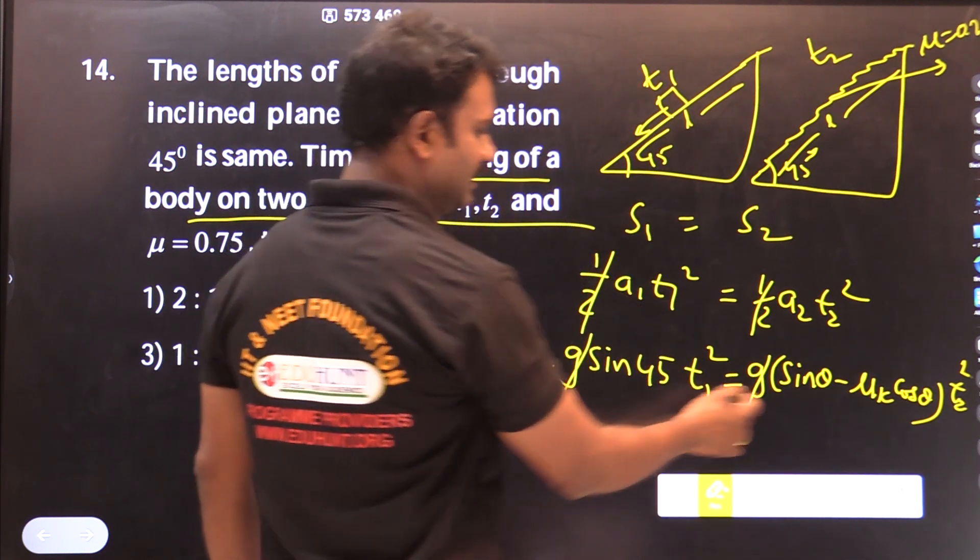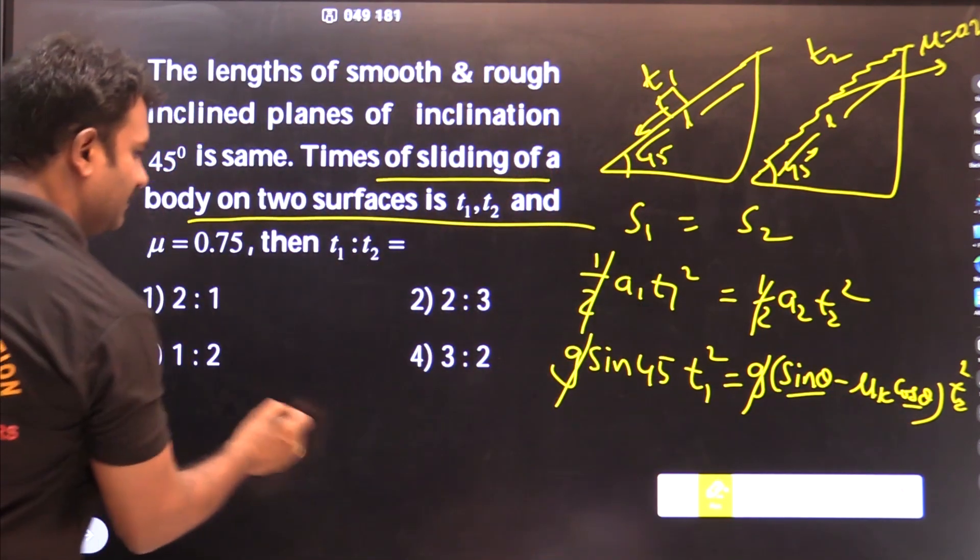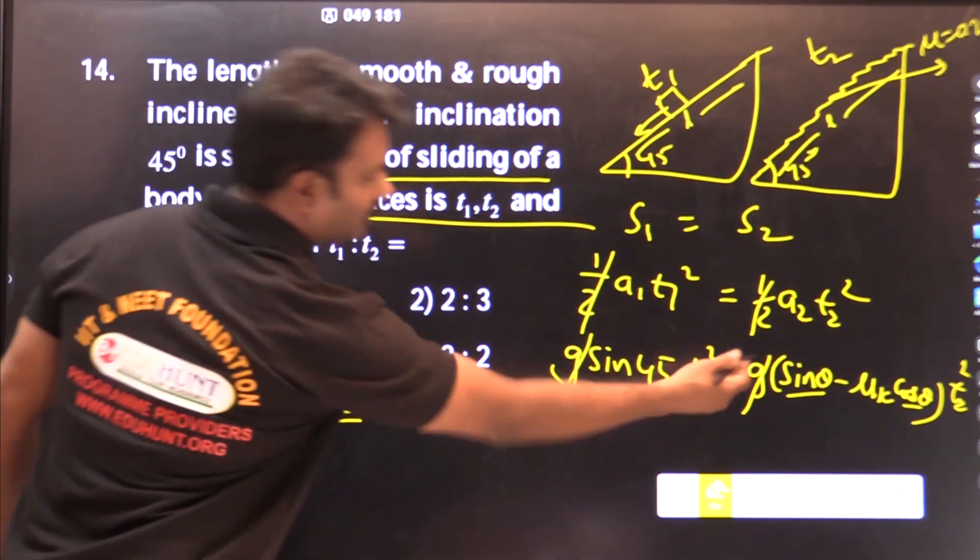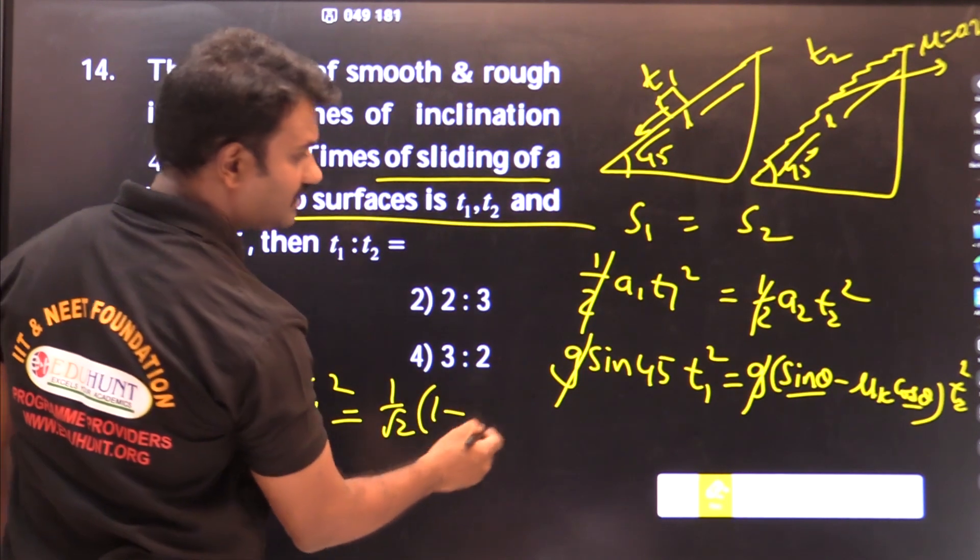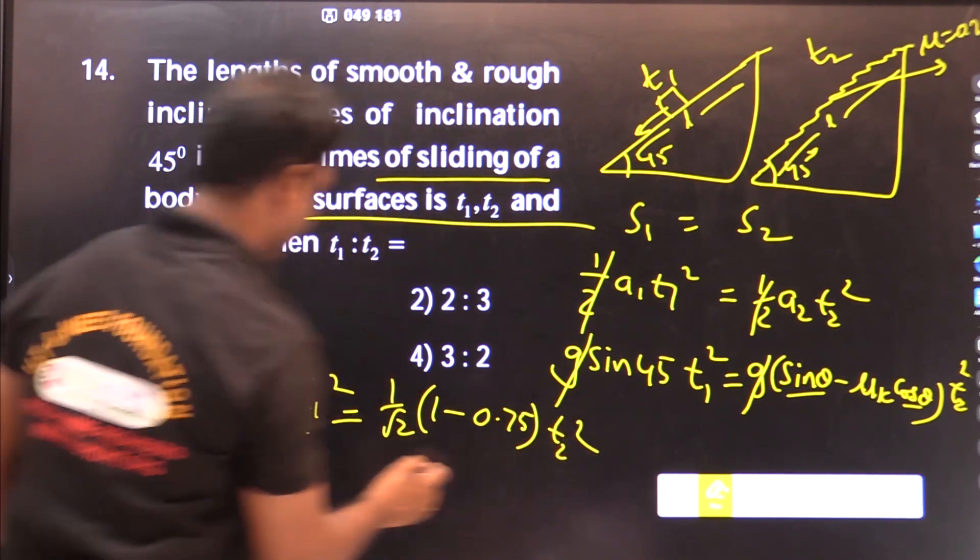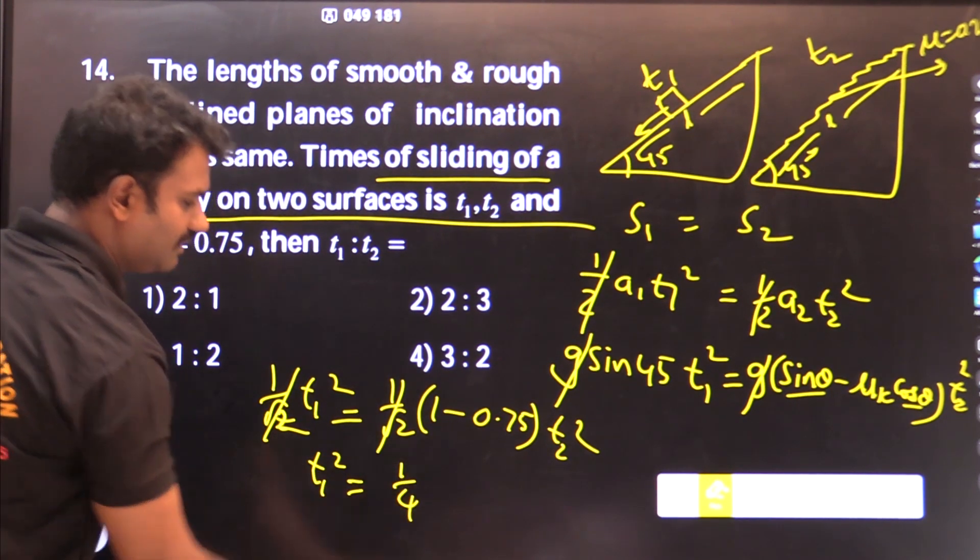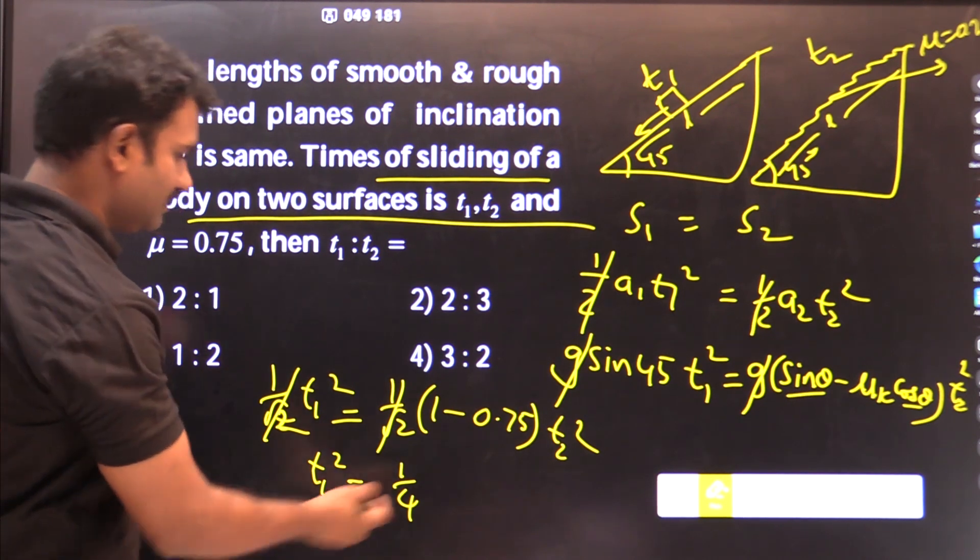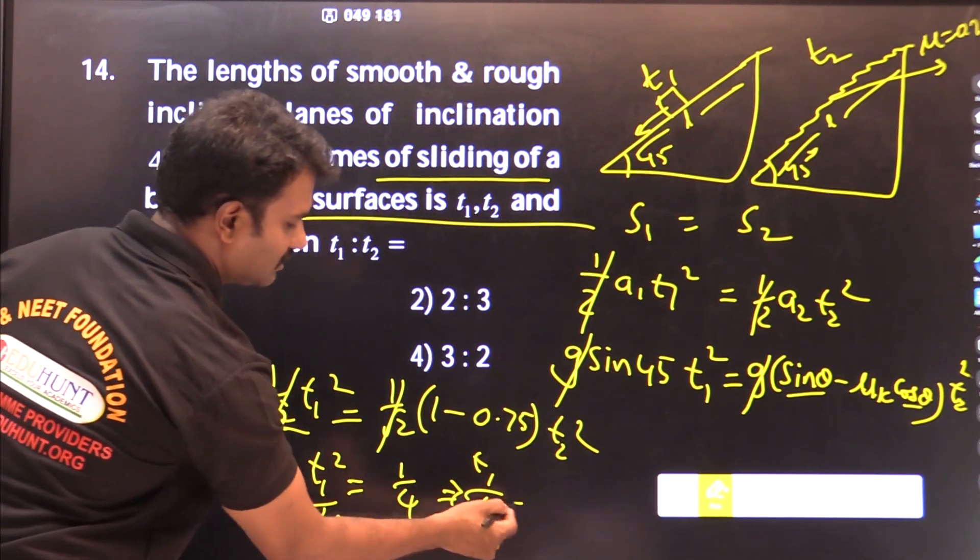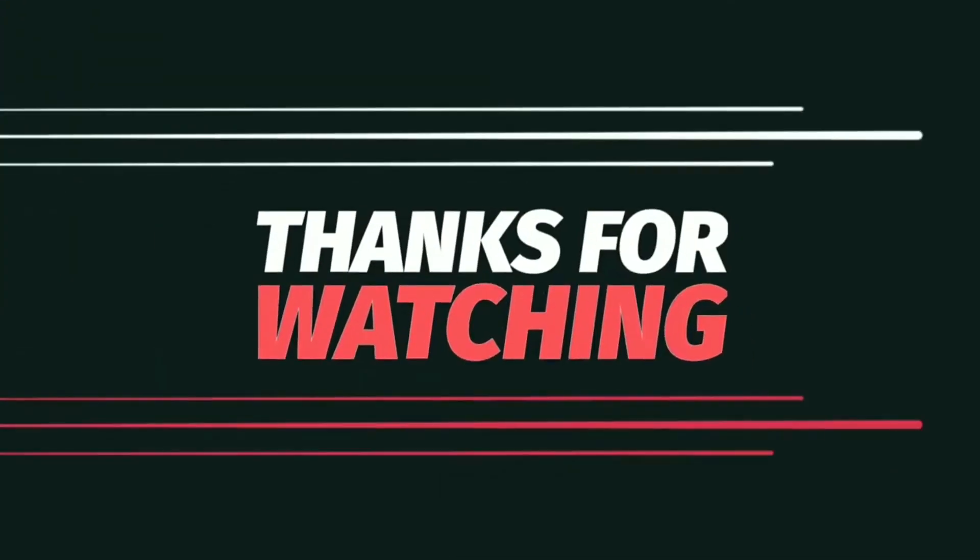G cancels. Sin 45 and cos 45 are same. 1 by root 2 times T1 squared, 1 by root 2 common on both sides. 1 minus mu K 0.75, which is 0.75 times T2 squared. T1 squared equals, this is 0.25, which is 1 by 4. So 0.25, 1 by 4, T2 squared. T1 by T2 equals 1 by 2.